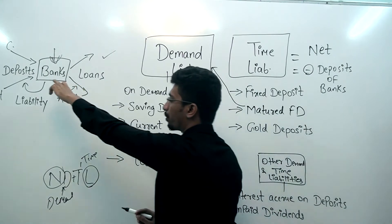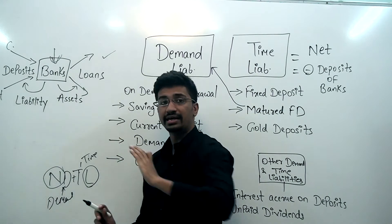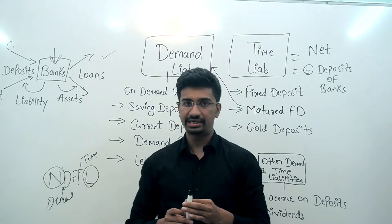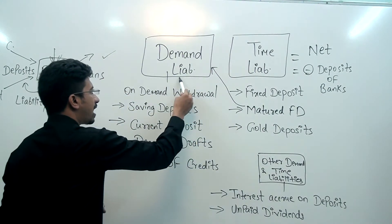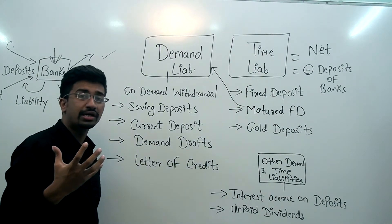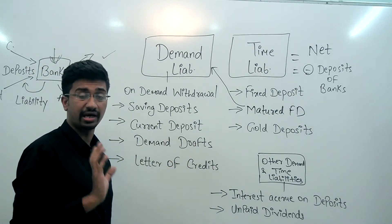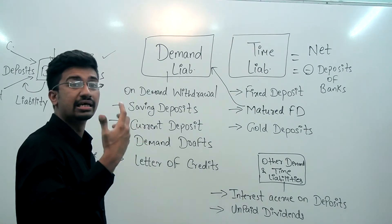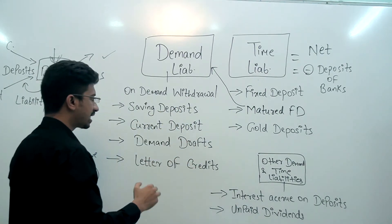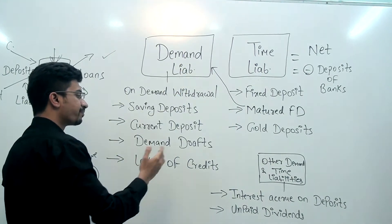यह जो deposits हैं, यह जो liability है banks के ऊपर — इन deposits को दो divisions में बाँटा गया है: D और T। एक होती है Demand Liability, एक होती है Time Liability। Demand liability में वो liability है जहाँ customer या depositor कभी भी bank में जाकर कह सकता है — 'लाओ मेरा पैसा दो, अभी की अभी।' इसमें on-demand withdrawal, saving deposit, current deposit, demand drafts, और letters of credit आते हैं।